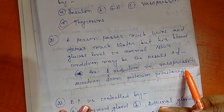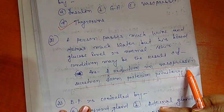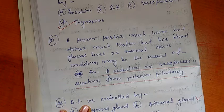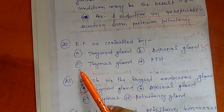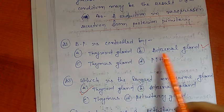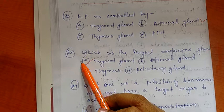Question number 22: BP is controlled by. Options are A) Thyroid gland, B) Adrenal gland, C) Thymus gland, and D) PTH. So the correct answer is adrenal gland. Question number 23: Which is the largest endocrine gland? Right option is thyroid gland. Thyroid gland is the largest endocrine gland among all the other endocrine glands.